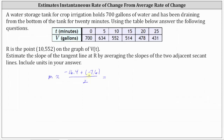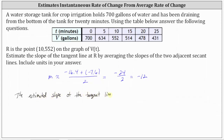The estimated slope of the tangent line at point R is −12 gallons per minute, which represents the instantaneous flow rate at exactly T = 10 minutes. The slopes of the secant lines represent average rates over a particular time interval. I hope you found this helpful.